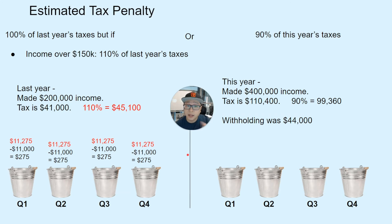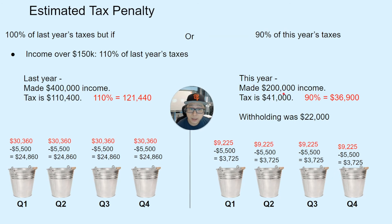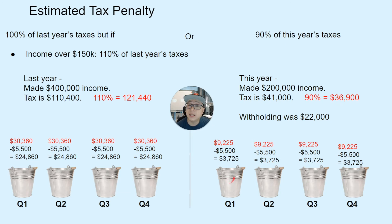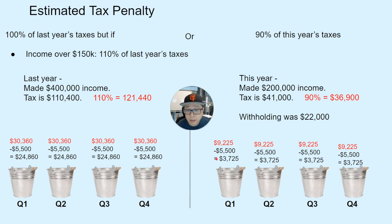Now let's look at an example where income is flipped — you made less this year compared to last year. Say this year you made $200,000 and last year you made $400,000. The tax on $200,000 is $41,000. Using the 90% rule: 90% of $41,000 is $36,900, divided by four is $9,225 per bucket. With $22,000 in withholding, divide by four to get $5,500 as a credit against that $9,225, leaving $3,725 that you must pay as a prepayment each quarter.